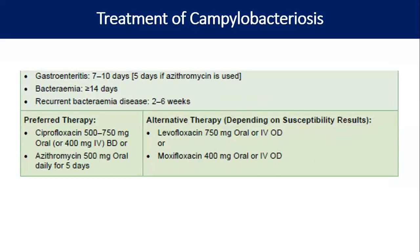For campylobacteriosis and gastroenteritis, the duration is 7–10 days, but azithromycin is 5 days. For bacteremia it is more than 14 days, and for recurrent bacteremia 2–6 weeks. Preferred therapy is ciprofloxacin or azithromycin (5 days for azithromycin, otherwise 7–10 days). Alternative therapy is levofloxacin or moxifloxacin.